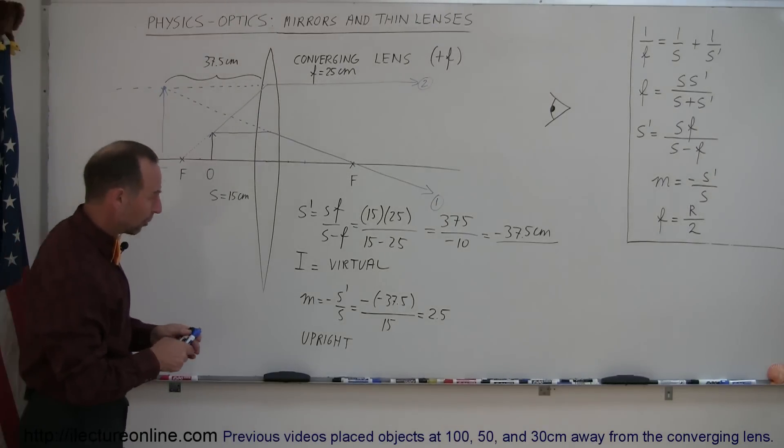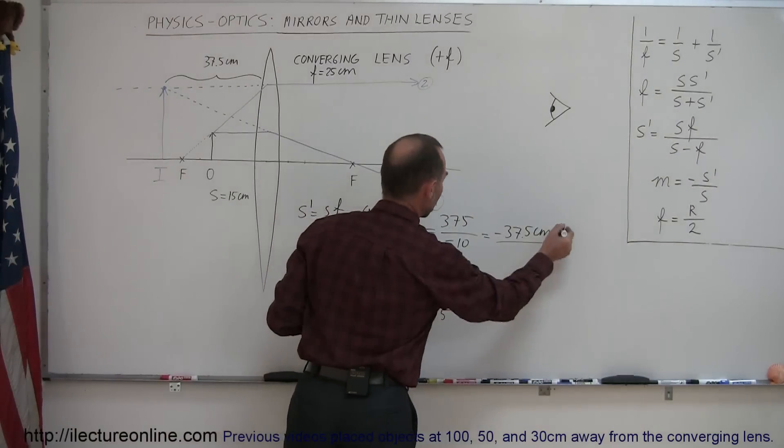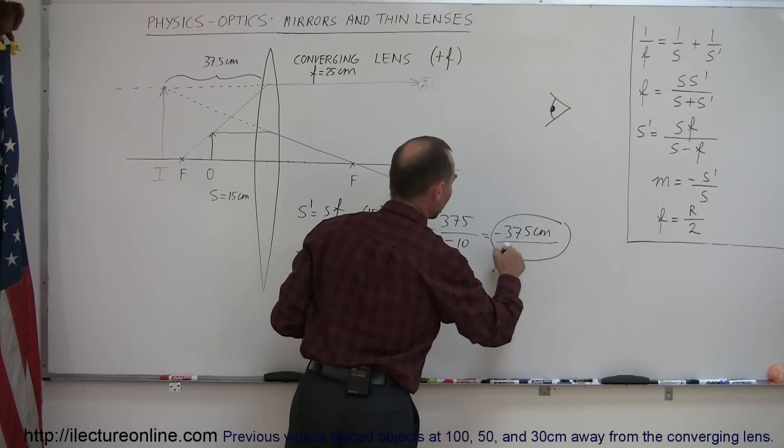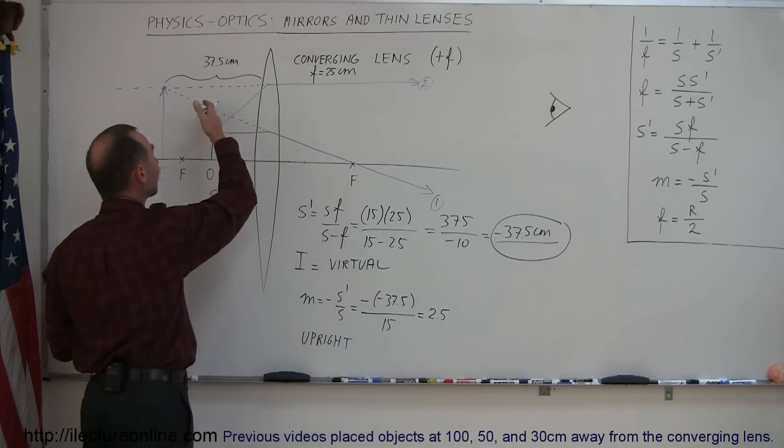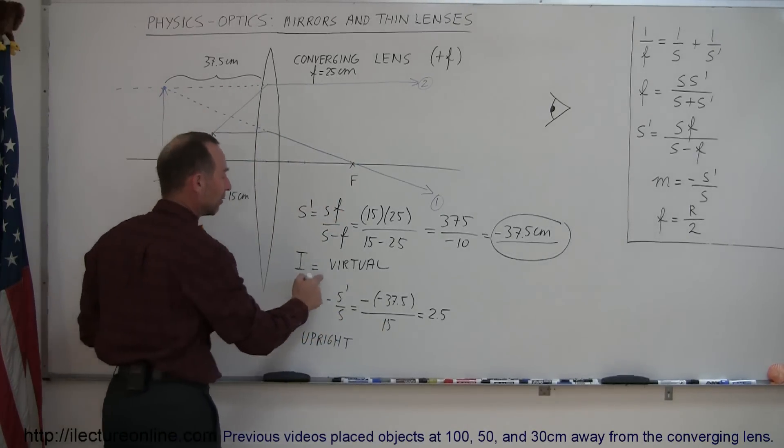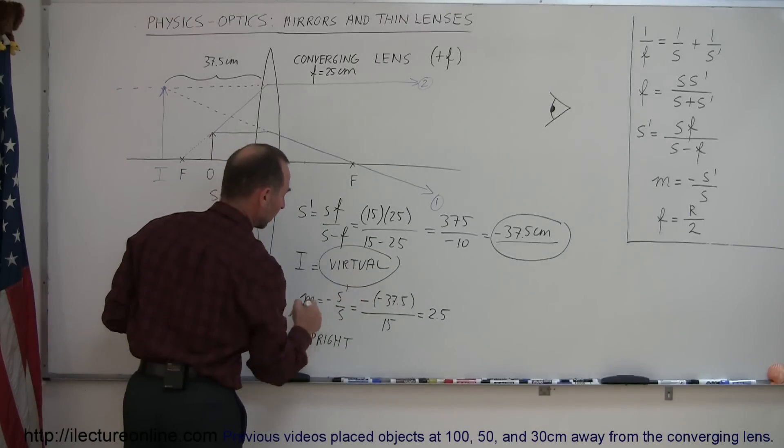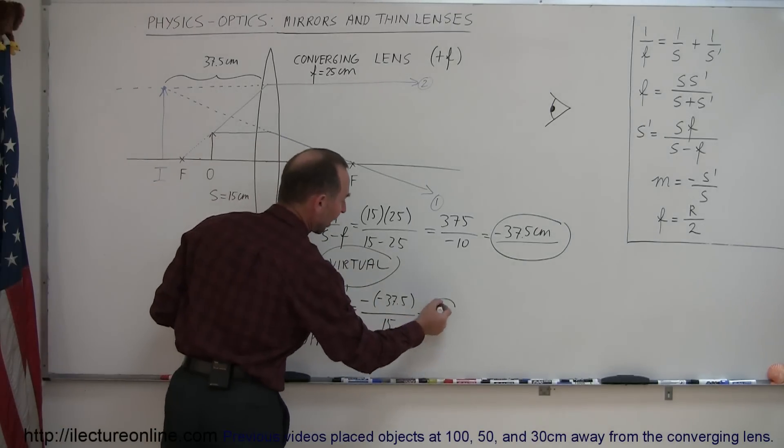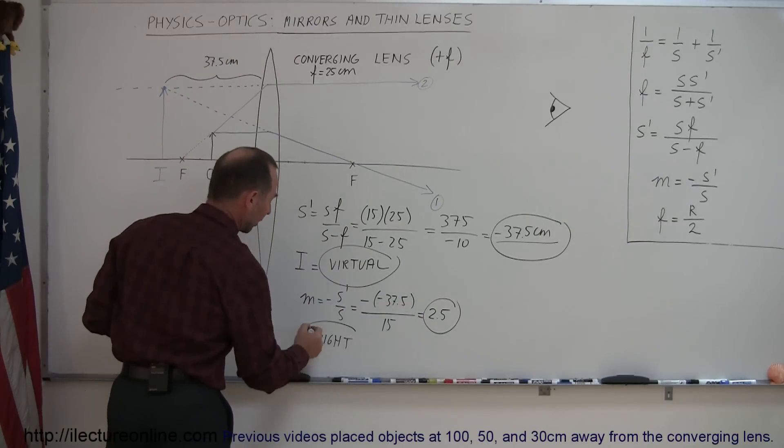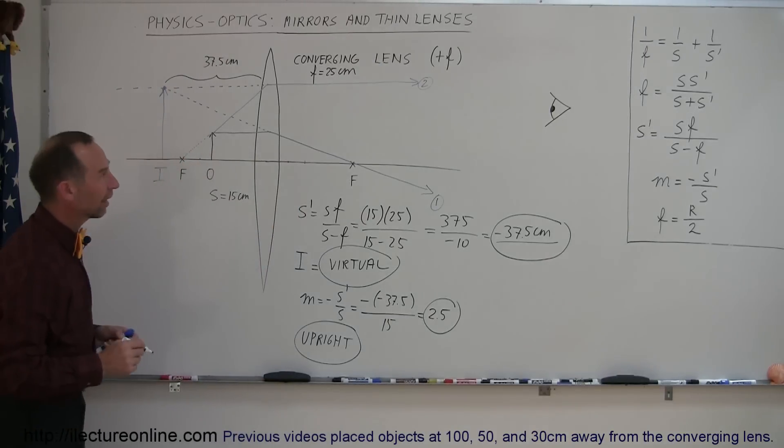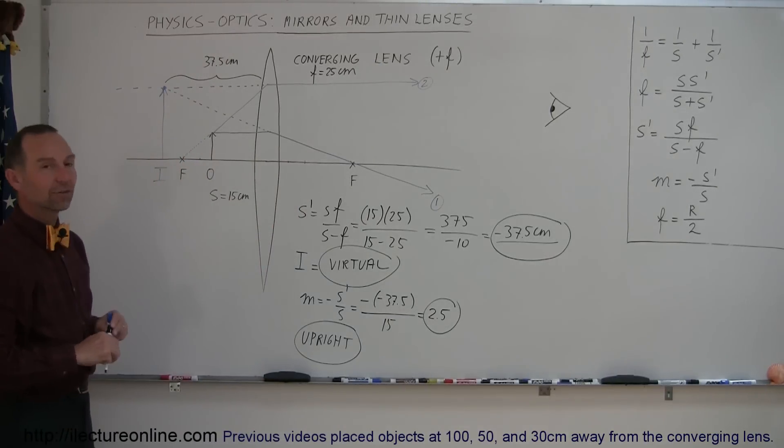All right, so again, summarizing, the distance to the image was 37.5 centimeters. The negative indicates that it's on the other side of the lens from the observer, meaning on the same side of the lens as the object, which makes it a virtual image. The magnification, 2.5 times the size of the original object. And since the magnification was positive, we can say that the image was upright. And that's how we work with converging lenses.